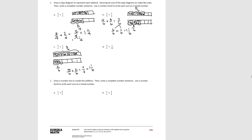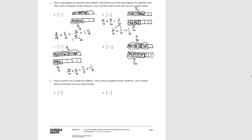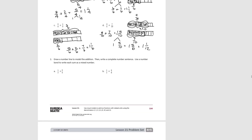Try D. For the first tape, we have 4/5 shaded. For the second tape, we're shading 7/10. To add them, we're going to decompose the fifths into tenths, giving 8/10. Now we can add: 8/10 plus 7/10 gives us 15/10, which decomposes into 1 and 5/10, or 1 and 1/2 if simplified.